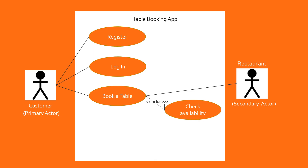If tables are not available for the day and time the customer selected, an error message needs to be displayed. Since this is not triggered every time — only when the table is not available under that particular condition — it is represented as an extend use case. The 'Book a Table' use case is linked to the 'Display Table Unavailable' use case through a dotted line with the word 'extend' written on it. This summarizes what the client is looking for and makes it easy for developers to visualize the functionalities and interactions, helping them build a solution in line with the client's expectations.